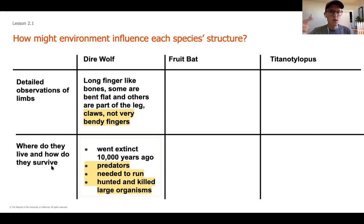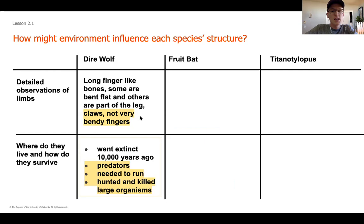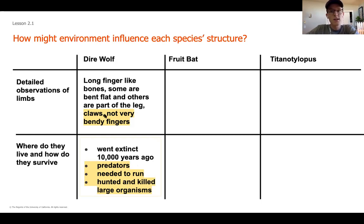Let me give you an example of the thinking you're going to want to be doing. When we look at the wolf, we're going to notice that it has some long finger-like bones, some are bent flat, and others are part of the leg. It's got some claws and some very bendy fingers. As a predator, it's going to need something to capture its prey - that's where its claws probably come in. If it were something that ate grass, like a cow, we might see that the ends of their fingers don't have claws. But the wolf makes sense as a predator to have those claws.